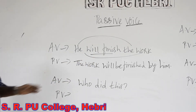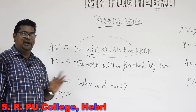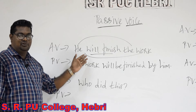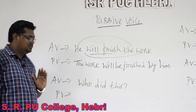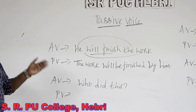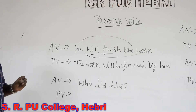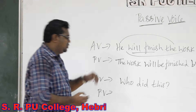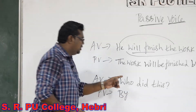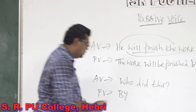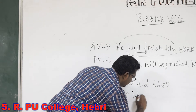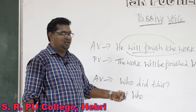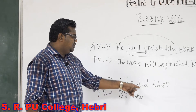Next sentence: Who did this? It is an interrogative sentence, and here we cannot apply the same rule like the previous sentence. So whenever you get an interrogative sentence like this, we should start by using the preposition 'by'. Then the word 'who' should be changed to 'whom'. Then based on the tense, we are supposed to use the auxiliary. Here the main verb is 'did'.